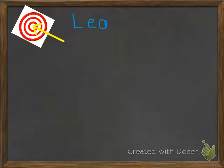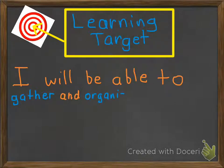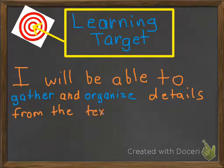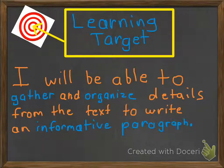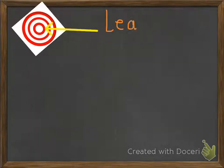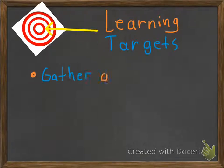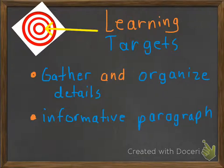Now I want to talk to you about our learning targets in the first lesson — remember, this is what you'll go home and tell Mom and Dad that you learned today. Our learning target is: I will be able to gather and organize details from the text to write an informative paragraph. This graphic organizer should look familiar and hopefully will jog your memory from your previous unit.